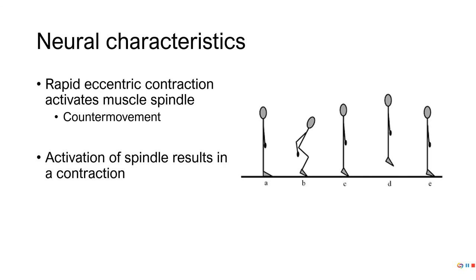Easy example: patellar tendon knee reflex. I whack you on the knee, your quadriceps contract, which leads to knee extension. This is something that has to occur quickly, and so we're going to take advantage of what these spindles do.